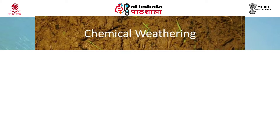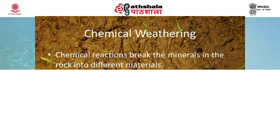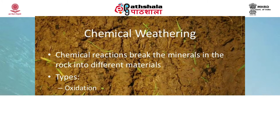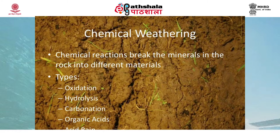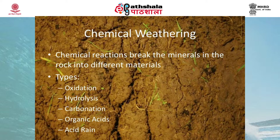First we will take chemical weathering. Chemical weathering involves the alteration of the chemical and mineralogical composition of weathered material. A number of different processes can result in chemical weathering. The common chemical weathering processes are hydrolysis, oxidation, reduction, hydration, carbonation, and solution.